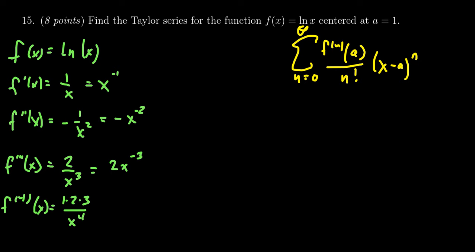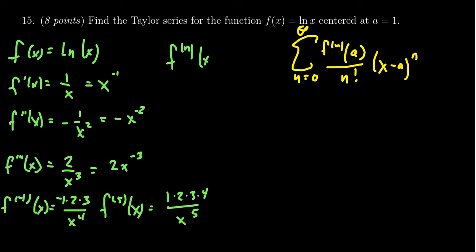That fourth derivative term is negative. For the fifth derivative you end up with a positive one times two times three times four over x to the fifth. Notice the sign pattern: it goes positive, negative, positive, negative, positive — it's alternating.